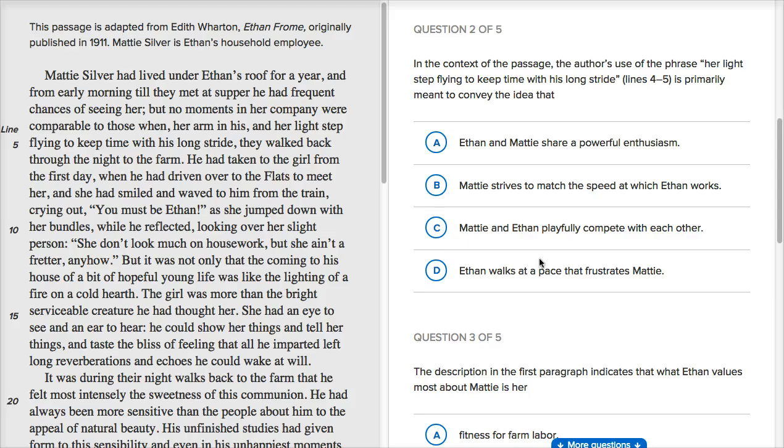Now that we've read the passage, let's see if we can answer the questions. In the context of the passage, the author's use of the phrase 'her light step flying to keep time with his long stride,' lines four to five, is primarily meant to convey the idea that. So that's right over here, lines four to five.